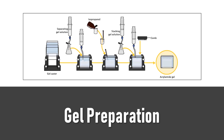After the resolving gel is loaded into the gel cassette, it is allowed to solidify. Saturated butanol or isopropanol is added to avoid oxygen and to facilitate proper polymerization of the gel matrix. After the resolving gel is ready, the stacking gel is loaded and the comb is added for the formation of the wells. After complete polymerization, the gel cassette is placed into the running buffer and the samples can be loaded onto the wells.